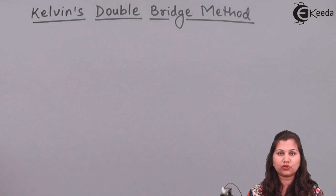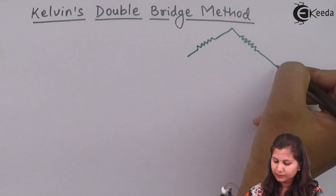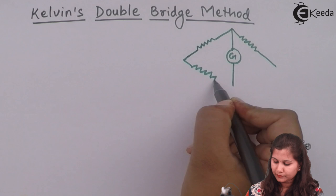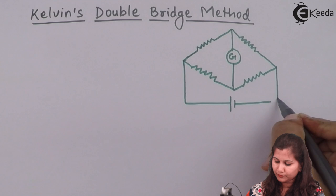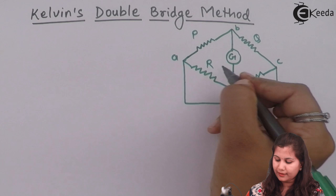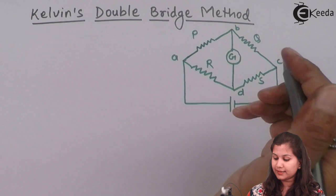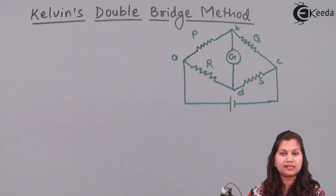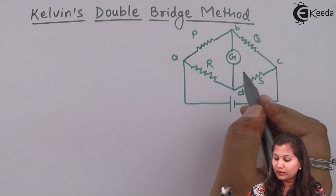If we draw the circuit for the Wheatstone bridge, it has 4 ratio arms ABCD with 4 resistances P, Q, R, and S. The Wheatstone bridge is balanced — the galvanometer shows null deflection, meaning no current flows through arm BD — when P/Q equals R/S.